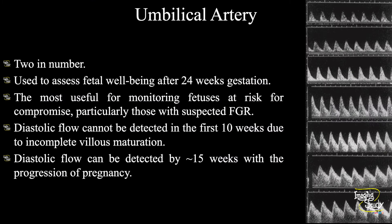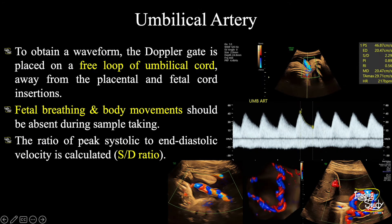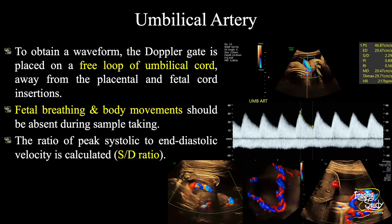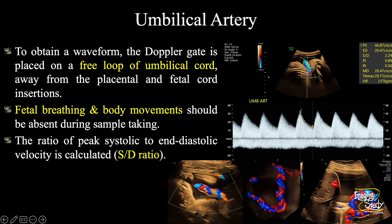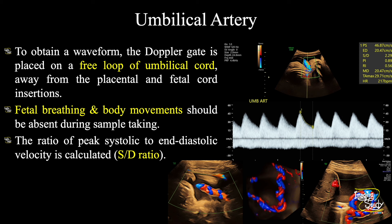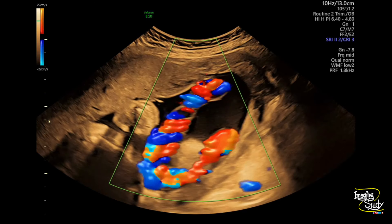The umbilical arteries are branches arising from the internal iliac artery of the fetus — usually two, but may be one or three, so you have to check. With time, diastolic flow will increase and the pattern will get a sawtooth appearance. We check the sample from a free loop of the umbilical cord, not at the placental insertion and not at the fetal insertion. Fetal movement and fetal breathing may disturb measurement, so always try to measure when the fetus is still. Clinicians usually try to remember the SD ratio, so if you don't write the SD ratio they won't appreciate your report.